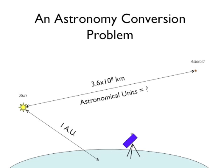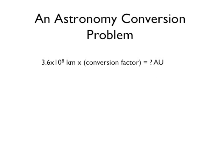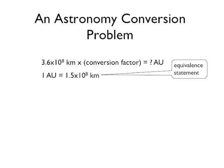One astronomical unit is the average distance between Earth and the Sun. You can look up an equivalence statement for a relationship like this when you need to, but we will provide it here.